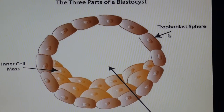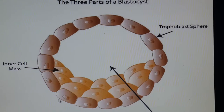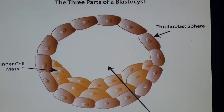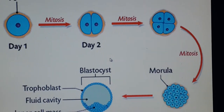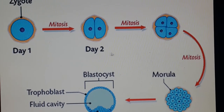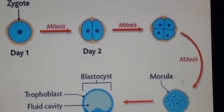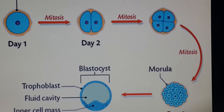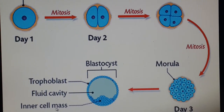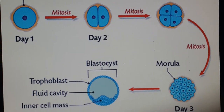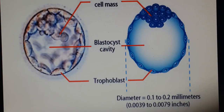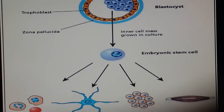Here we have the three parts of the blastocyst: the outer cell mass called the trophectoderm, the inner cell mass, and the blastocyst cavity. Here is a review picture of the cleavage process. We have mitosis at day two, then the morula, and then the blastocyst. As we said, at day five after fertilization, the blastocyst will be formed, and we discussed its three parts.